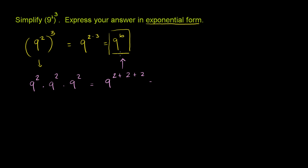Either way, you're going to get the same thing. To be clear: here we added the exponents because we had the same base and we were multiplying them. And here we multiplied the exponents because we had something to an exponent and then that whole thing raised to another exponent. Regardless of which direction you go, as long as you use your properties correctly, you should get 9 to the 6th power.